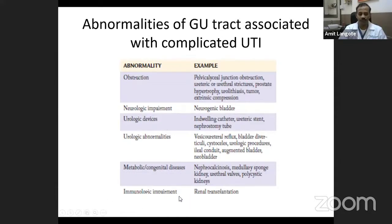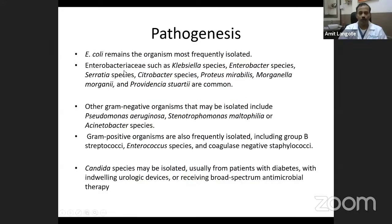E. coli remains the most commonly isolated organism. Other Enterobacteriaceae like Klebsiella, Citrobacter, Proteus, and Providencia are also found. Gram-negative organisms like Pseudomonas and Acinetobacter are also seen, as are gram-positive organisms like Enterococcus and coagulase-negative Staph. Fungal infections like Candida can be commonly isolated from patients with diabetes, those with indwelling catheters, or patients receiving prolonged broad-spectrum antimicrobial therapies.